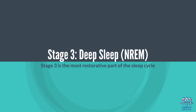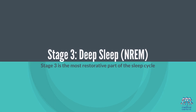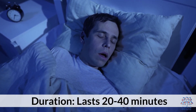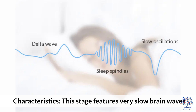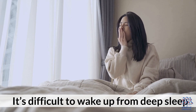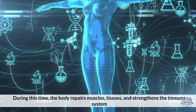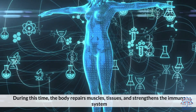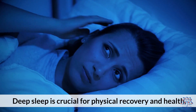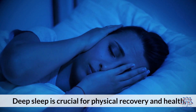Stage 3: Deep Sleep (NREM). Stage 3 is the most restorative part of the sleep cycle. Duration: lasts 20 to 40 minutes. Characteristics: this stage features very slow brain waves, and it's difficult to wake up from deep sleep. During this time, the body repairs muscles and tissues, and strengthens the immune system. Deep sleep is crucial for physical recovery and health.